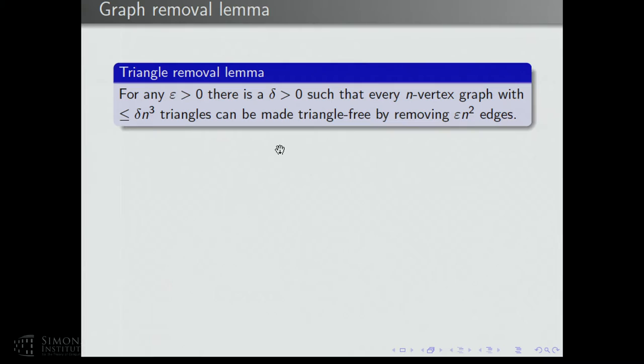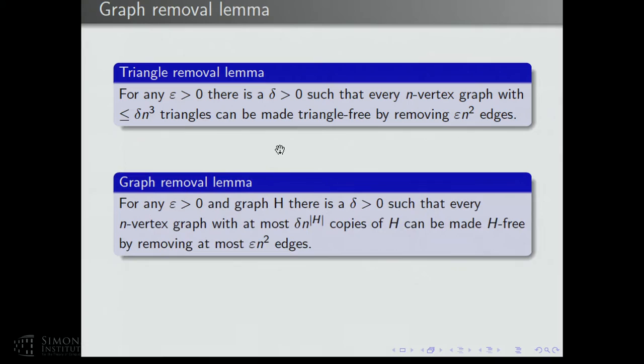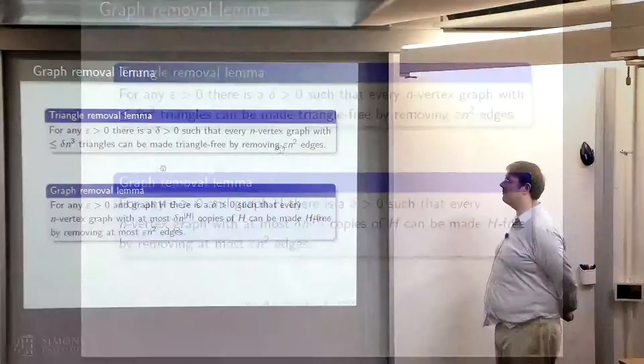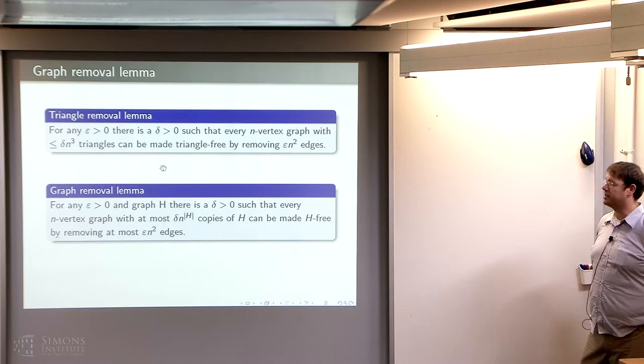We also proved yesterday one of the nice applications, which is the triangle removal lemma. It tells you if a graph has few triangles, then you can remove few edges from it and get rid of all the triangles. The proof of the triangle removal lemma generalizes to a graph removal lemma: given any graph H and epsilon greater than zero, there's a delta greater than zero such that any graph with few copies of H can be made H-free by removing a small number of edges.